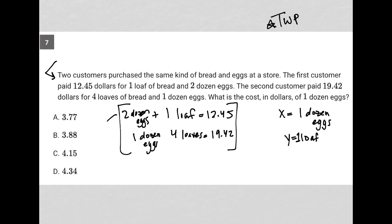So that would mean that my first equation would turn into 2X plus Y equals 12.45. And my second equation would turn into X plus 4Y equals 19.42. Now, writing it this way allows me to solve the question for one dozen eggs by solving for X. So I can use a process called elimination in order to solve for X here.